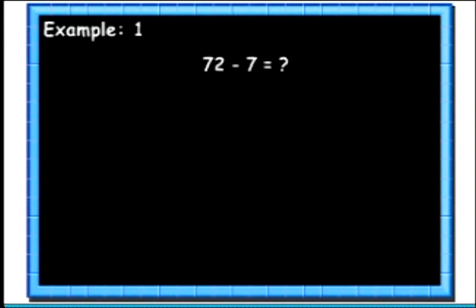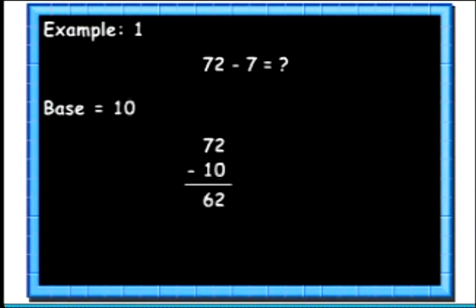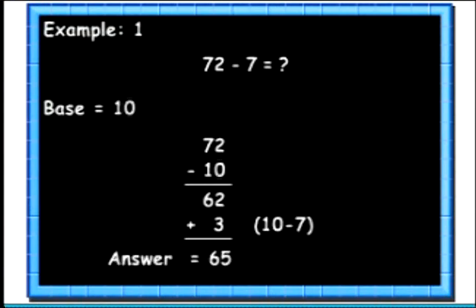Let's see an example. Here we want to know the difference of 72 and 7. Here we will take the base as 10. Instead of subtracting 7 from 72, we will subtract 10. We get 62. Then we will add 10's complement of 7 to the result, which is 3. So we get the answer as 65.